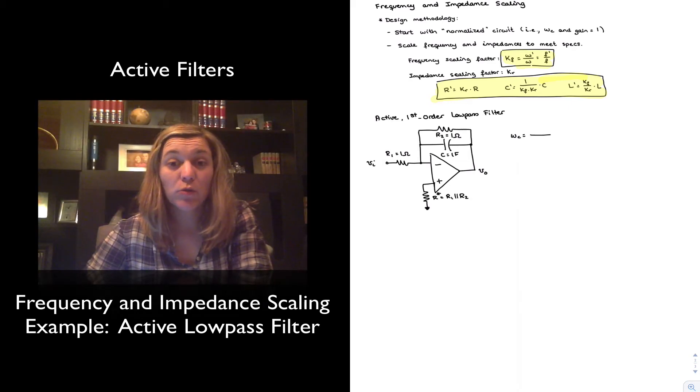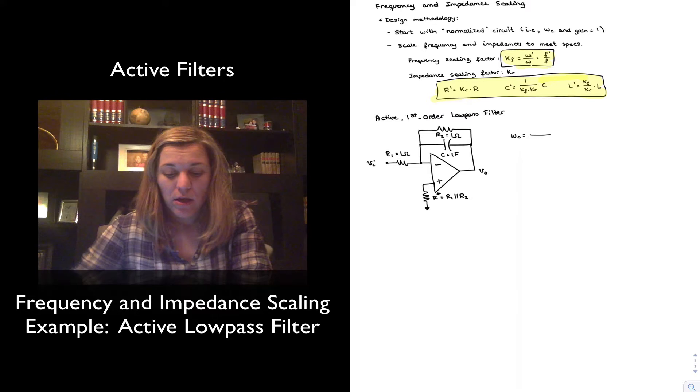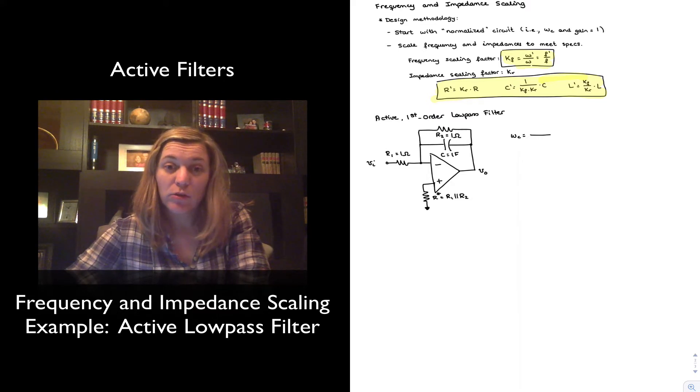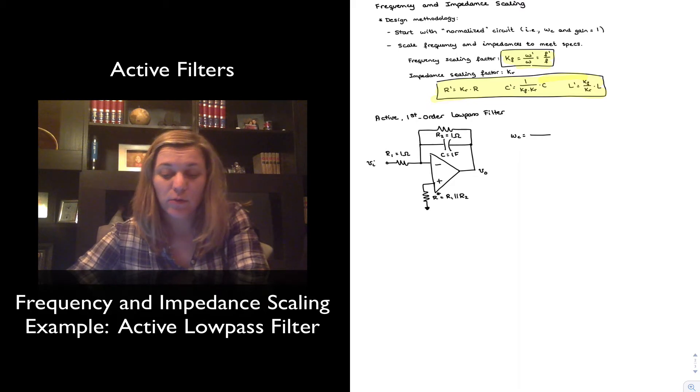In this video, we're going to take a look at another example of applying frequency and impedance scaling in the design of filters. I have rewritten the design methodology. Again, we are starting with a normalized circuit where the gain and the cutoff frequency are equal to 1. And then we're going to calculate the frequency and impedance scaling factors to know what scaling factor we need to apply to our circuit components in order to get the design specifications that we want.